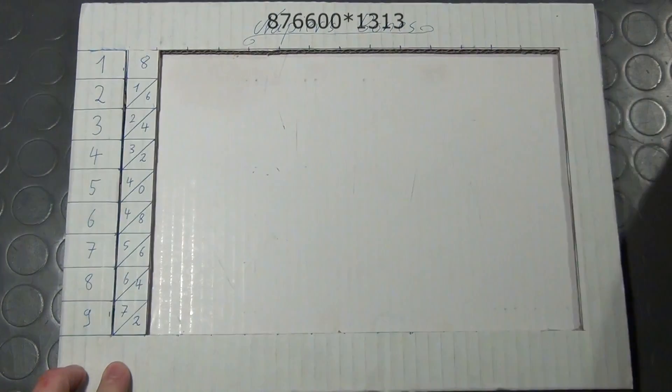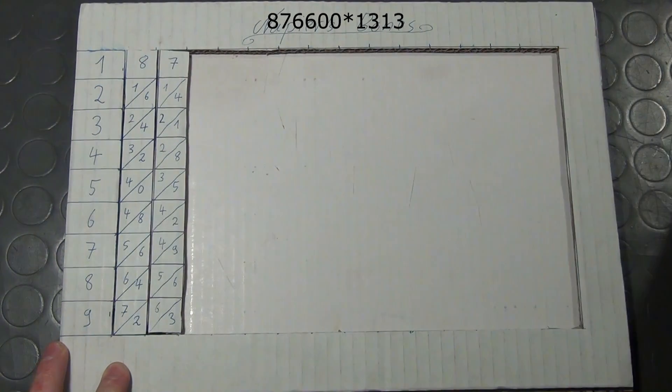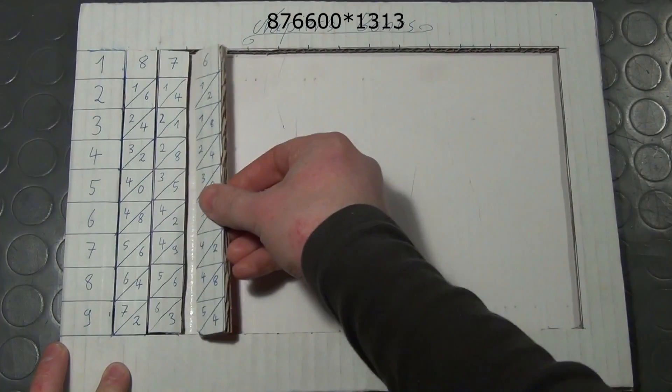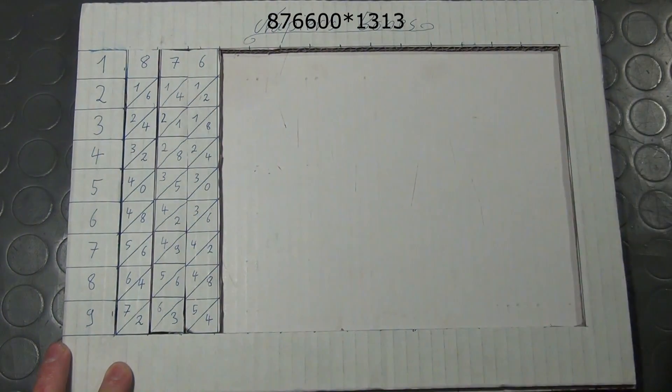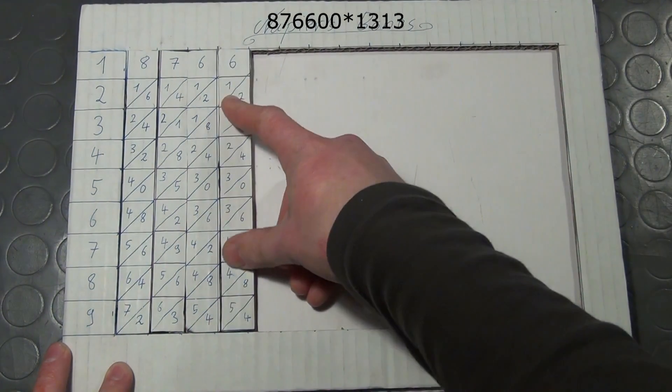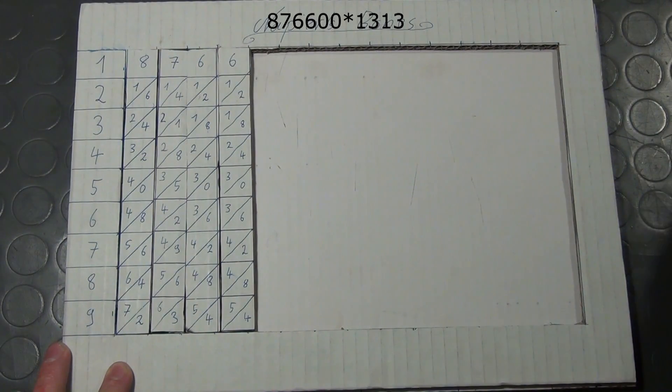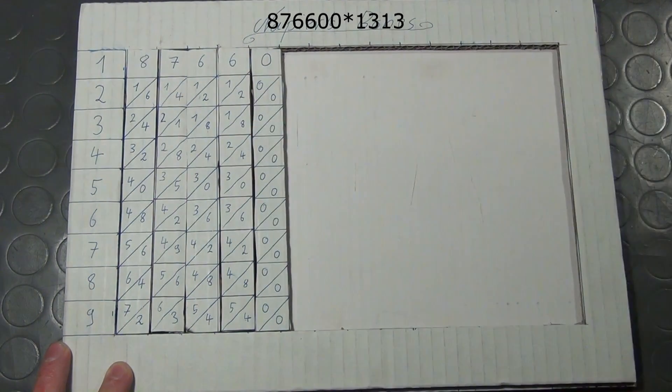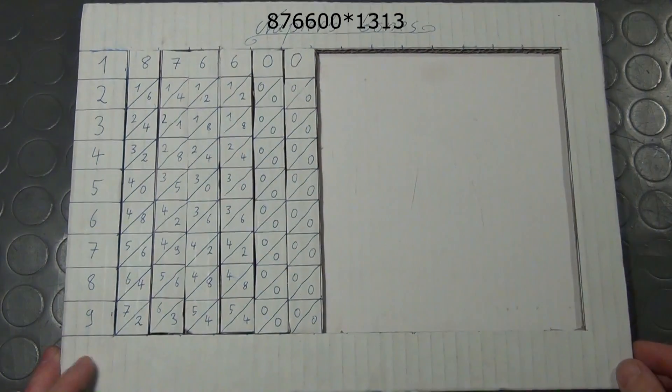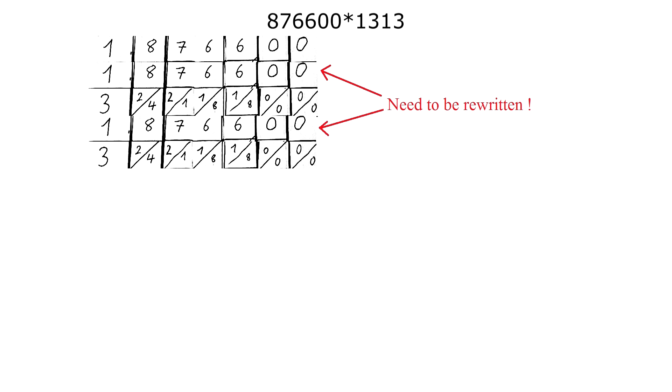For that we again place the rods in the right order into the frame. This time I need two number 6 and two 0 rods. As you can see you will need more than one set of bones for most calculations. Now you take a look at row 1 and 3. But if the factor has the figure 1 in it the rows have to be rewritten first.